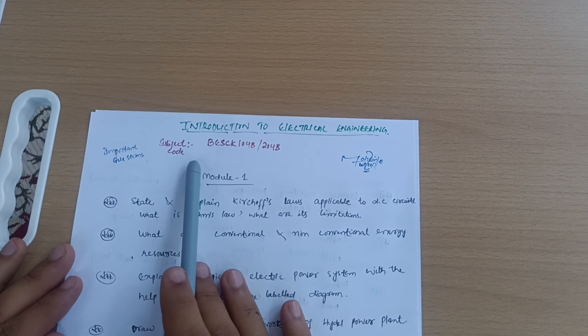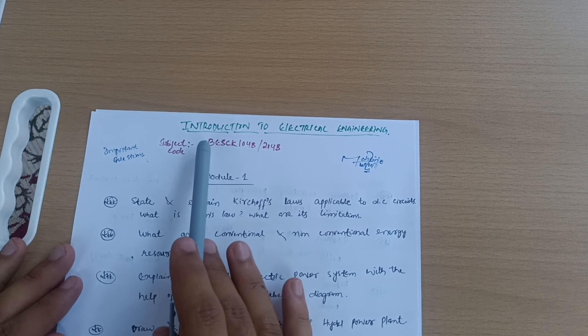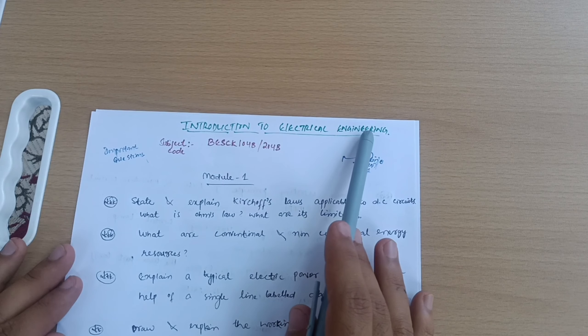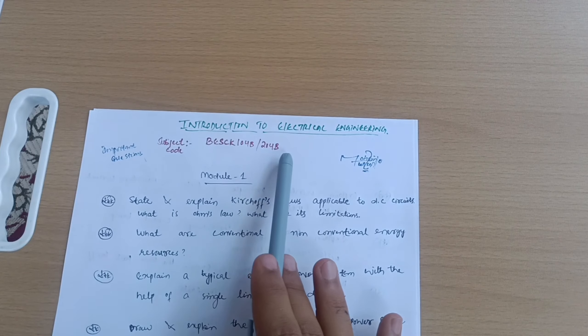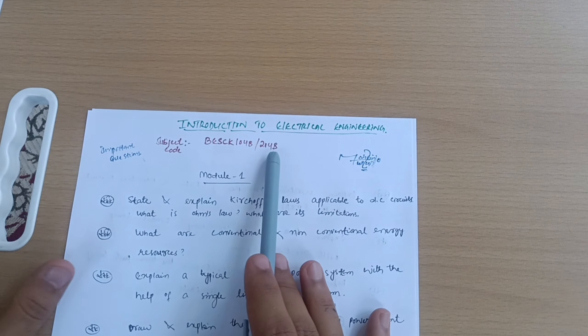Introduction to Electrical Engineering, subject code BESCK104B204B. Those currently in second semester, it is 204B. If somebody is writing backlogs, they can also refer this important passing package.